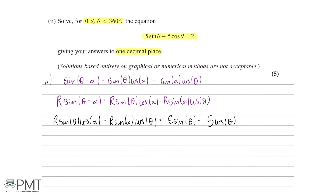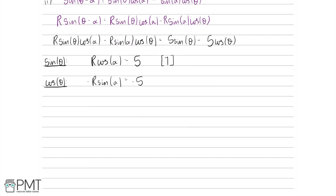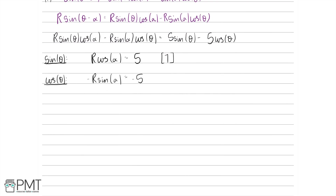Comparing coefficients of sin θ on both sides: r cos α equals 5 — call this equation 1. Comparing coefficients of cos θ: minus r sin α equals minus 5, so cancelling the negatives, r sin α equals 5 — call this equation 2.